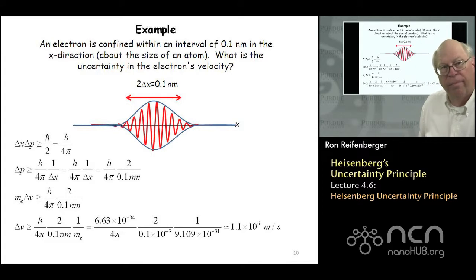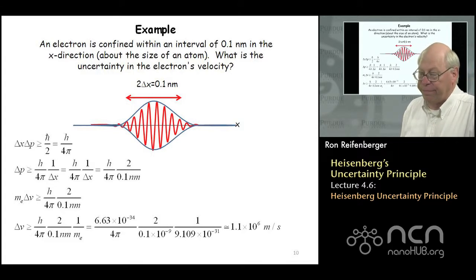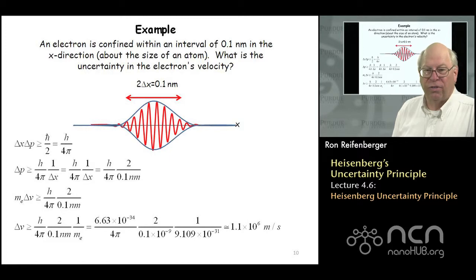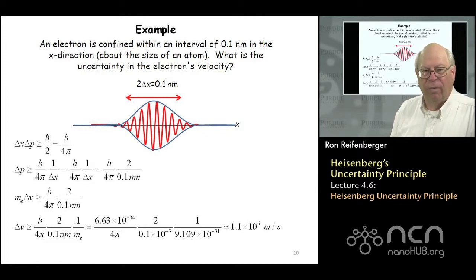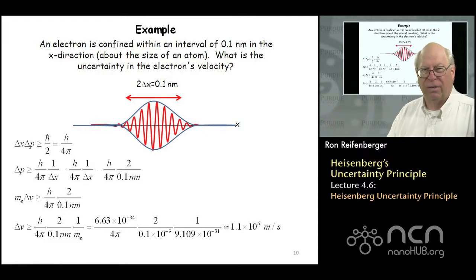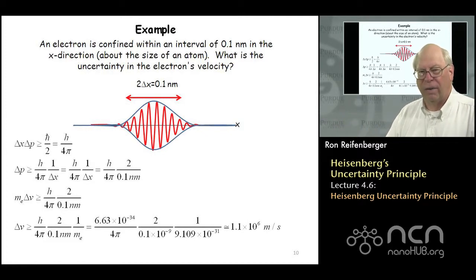I want to work through an example to make sure you understand the implications of Heisenberg's principle. In introductory courses it's often used in questionable ways — for example, asking you to calculate the uncertainty in position of a baseball when its momentum is known. That's applying Heisenberg's principle to a situation where it doesn't really apply; we're not worried about the quantum mechanics of baseball. The principle is somehow misstated in a lot of introductory courses.